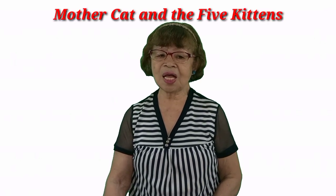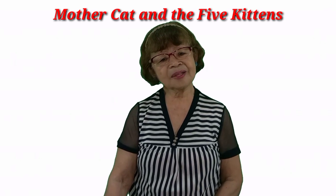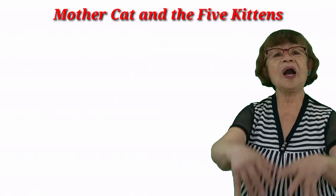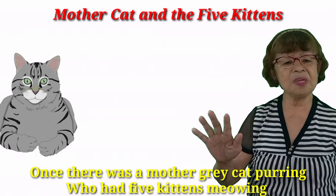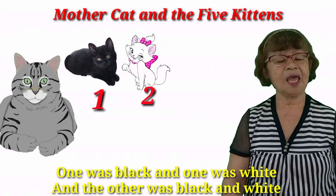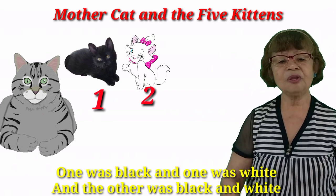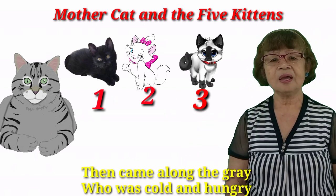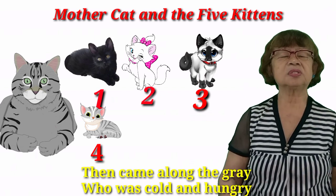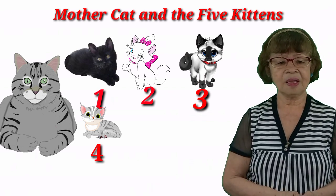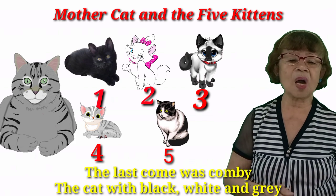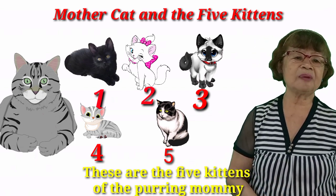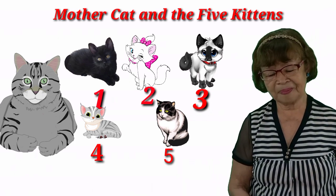Hi kids, we are going to recite a poem. The title of the poem is 'Mother Cat and the Five Kittens.' Once there was a mother gray purring, who had five kittens meowing. One was black and one was white, and the other was black and white. Then came along gray, who was cold and hungry. The last to come was Combi, the cat with black and white and gray. These are the five kittens of the purring mummy. Yay!